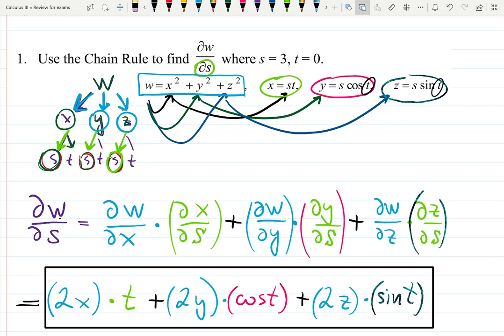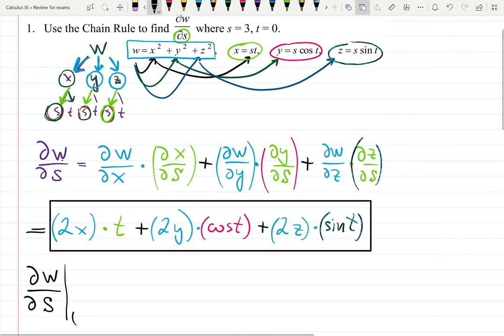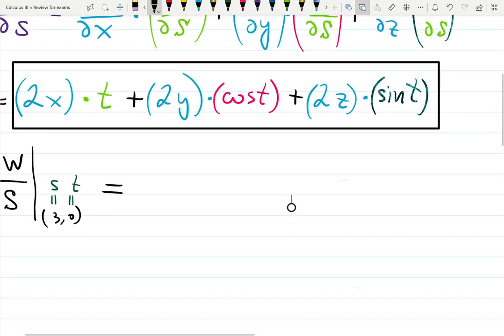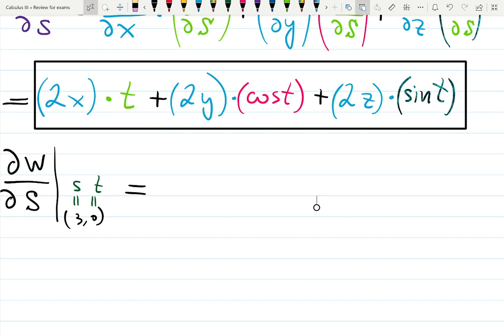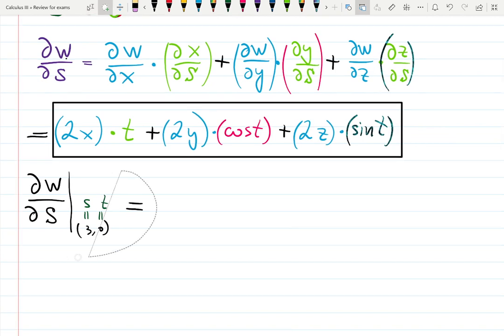So just to make sure you understand, partial derivative of W with respect to S at the point (3, 0), and if you want to have a good note you can put that S is 3 and T is 0. You plug carefully in - oh, oh, what should I do? I did not actually... how can I plug 2X? So I have 2X but what is happening with 2X when I want to plug S and T?